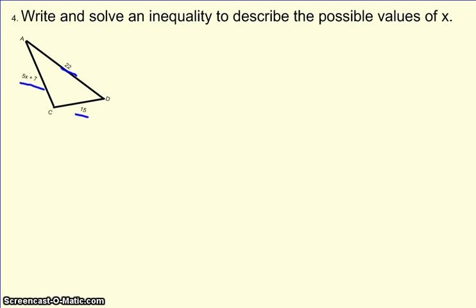So if you look at this triangle right here, you can see that 15 is your smallest side, 22 is your largest side, and the 5x plus 7 would be your medium or middle side.